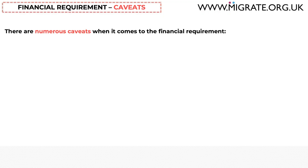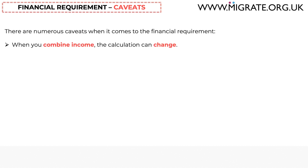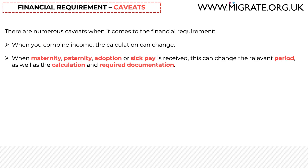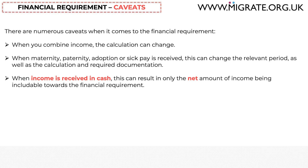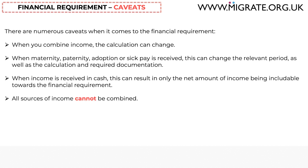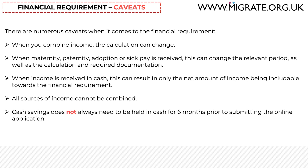So that was a discussion of what can and cannot be included in the financial requirement and how permitted sources of income are generally calculated. The word 'generally' is used because there are, unfortunately, many caveats that apply. For example, when different sources of income are combined, the calculation can change. Where maternity, paternity, adoption, or sick pay is received, this can change the relevant period as well as the calculation and required documentation. When income is received in cash as opposed to a direct bank transfer, this can result in only the net amount being includable. All sources of income cannot be combined — for example, self-employment income and cash savings cannot be combined. Cash savings does not always need to be held in cash for six months if additional requirements are met.